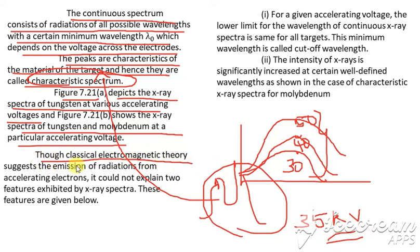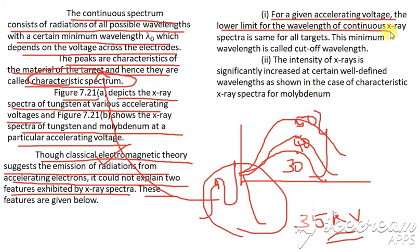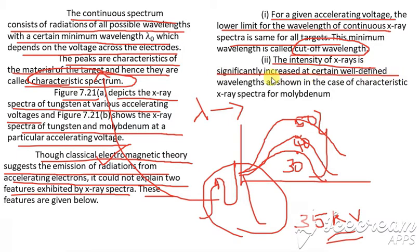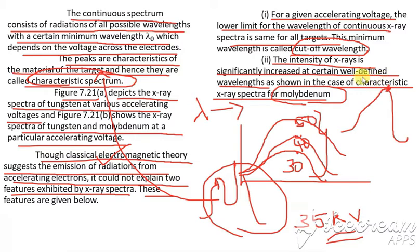Classical electromagnetic theory suggested emission of radiation from an accelerating electron but could not explain the features of the X-ray spectrum. One feature is that for a given voltage, the lower limit of wavelength — called the cutoff wavelength — is the same for all targets. Another feature is that intensity increases at well-defined wavelengths, giving the characteristic X-ray spectrum.